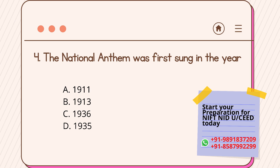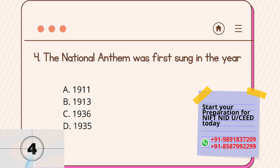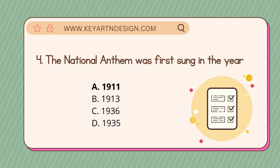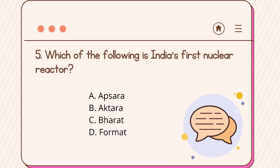Question number four: the national anthem was first sung in the year. Option A: 1911, Option B: 1913, Option C: 1936, Option D: 1935. The correct answer is Option A, 1911.